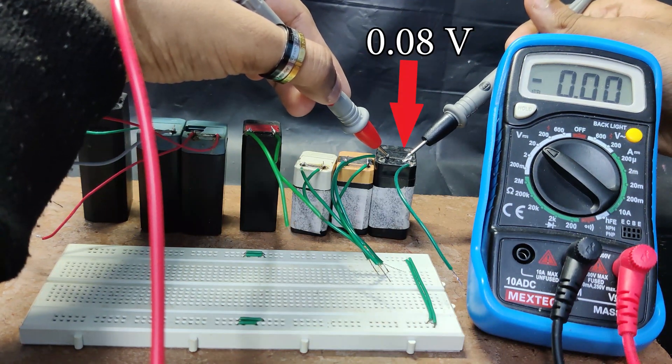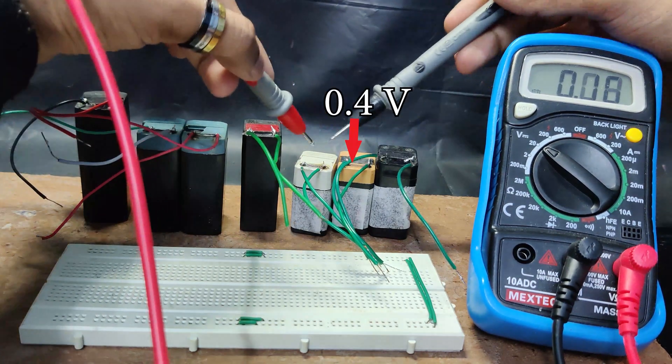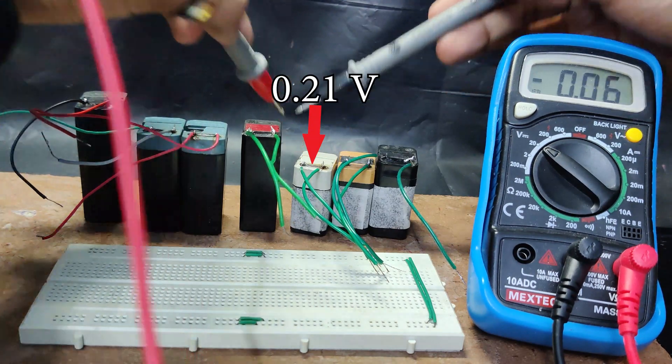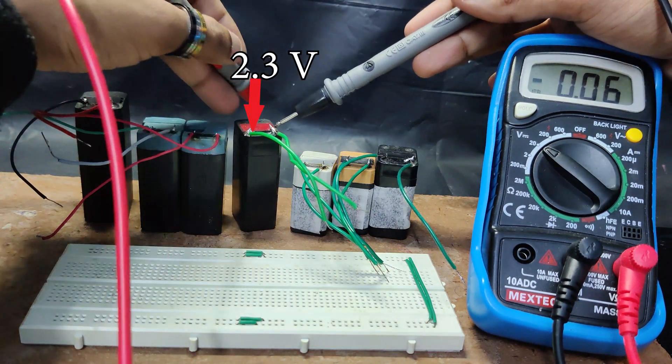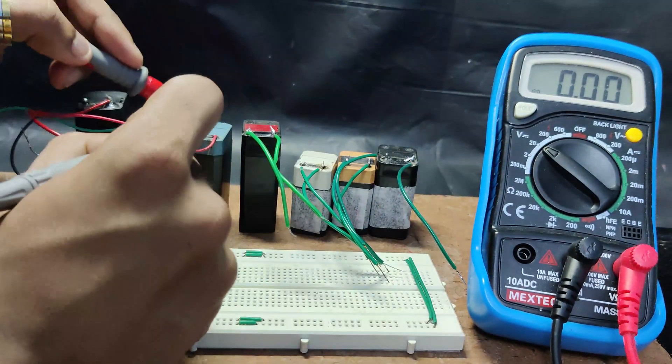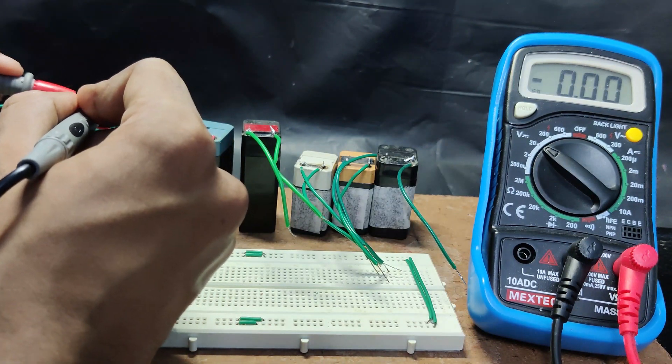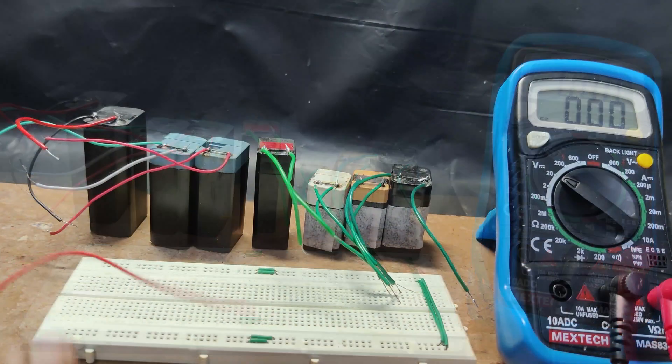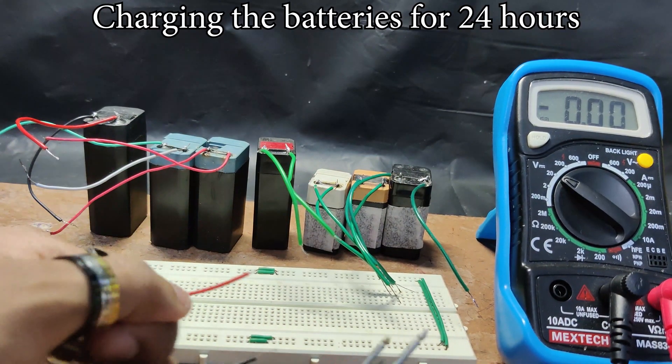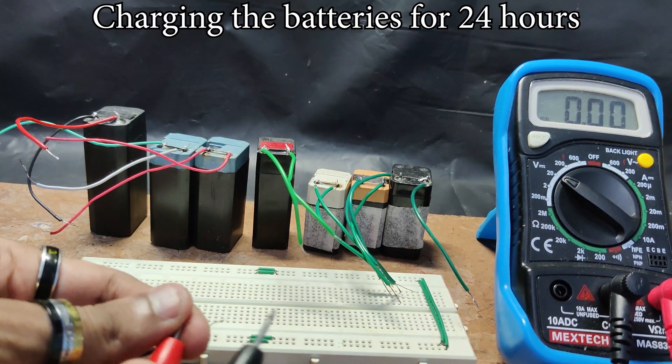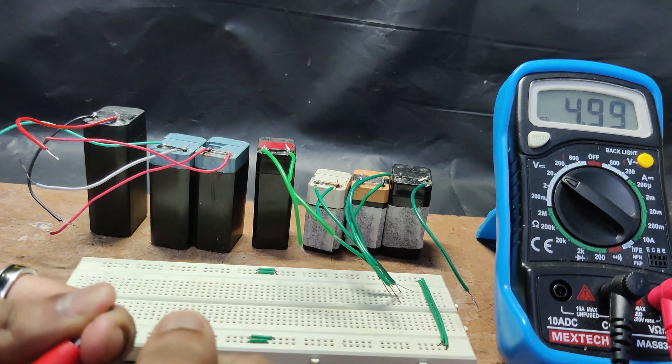The initial voltages are: 0.08V, 0.4V, 0.21V, 2.3V, 2.43V, 2.49V, and 0.04V. I will be using these two wires for charging these batteries, and this has a voltage of 5V.